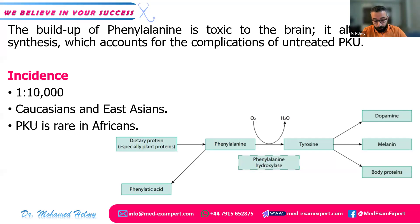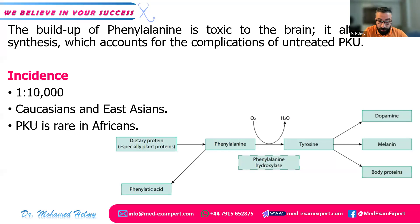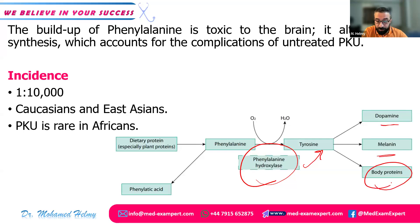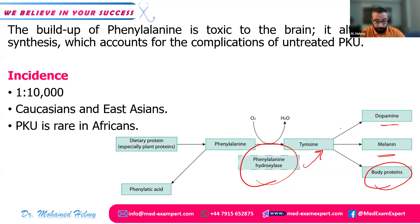As you can see in the diagram from the 2018 talk published by the Royal College, most animal proteins contain the amino acid phenylalanine, which is converted by phenylalanine hydroxylase into tyrosine. From tyrosine, dopamine, melanin, and other proteins are formed. The incidence of this disease is about 1 in 10,000, most commonly found in Caucasians and East Asians, and very rare in Africans.